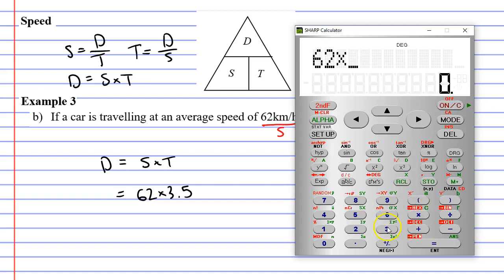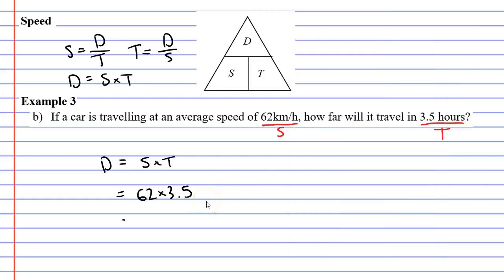and we can just multiply those two values together. 62 times 3.5 equals 217. So we will have traveled 217 kilometers.